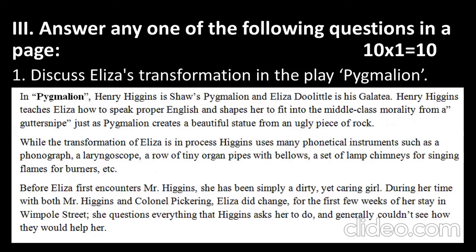Now, Section 3 of this play: you need to answer any one of the following questions and each question is for 10 marks. You need to answer in one to two pages. Question 1: Discuss Eliza's transformation in the play Pygmalion. In the play Pygmalion, Henry Higgins is Shaw's Pygmalion and Eliza Doolittle is his Galatia. Henry Higgins teaches Eliza how to speak proper English and shapes her to fit into the middle-class morality from a gutter snip, just as Pygmalion creates a beautiful statue from an ugly piece of rock.